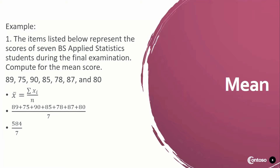By summing up the numerator, we're going to get 584 and then divide it by 7 — since 7 is the number of data entry. If you divide 584 by 7, rounding it up to the nearest hundredths, you're going to get 83.43. We can therefore conclude that 83.43 is the mean score of the 7 BS Applied Statistics students on their final examination.